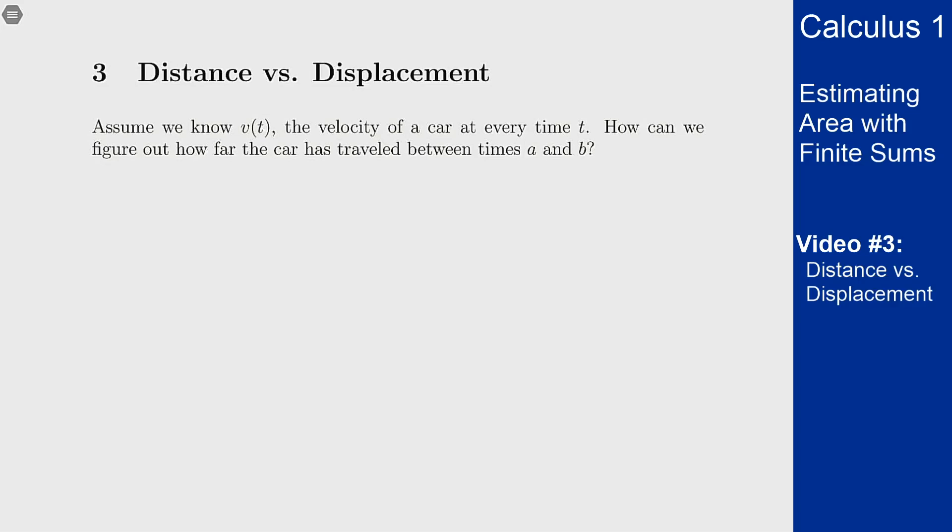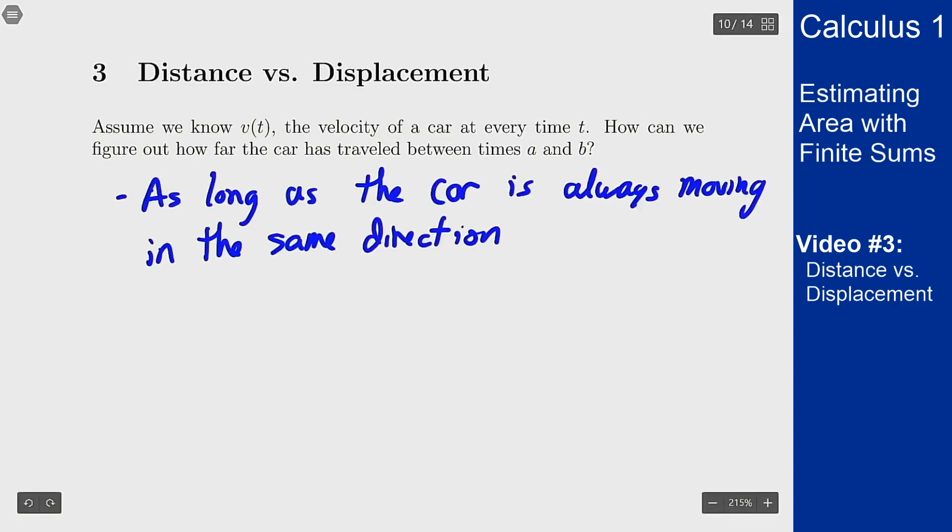We mentioned this earlier to motivate the discussion of area, but as long as the car is always moving in the same direction, then I can find the distance traveled by just the area under the velocity-time graph.